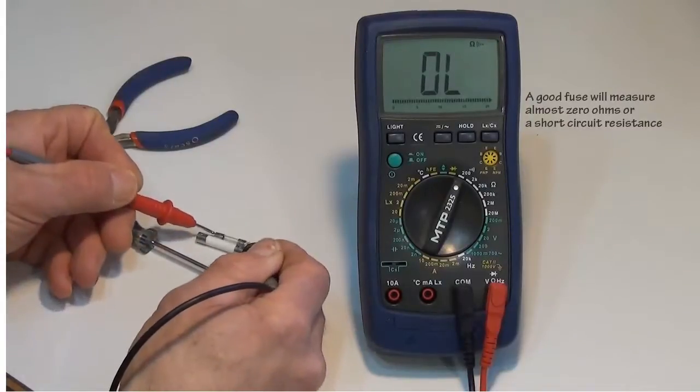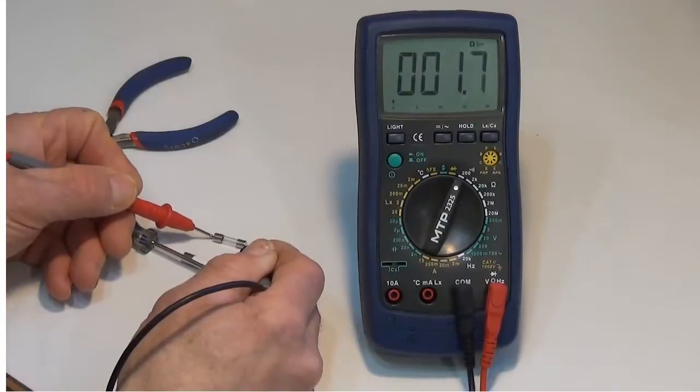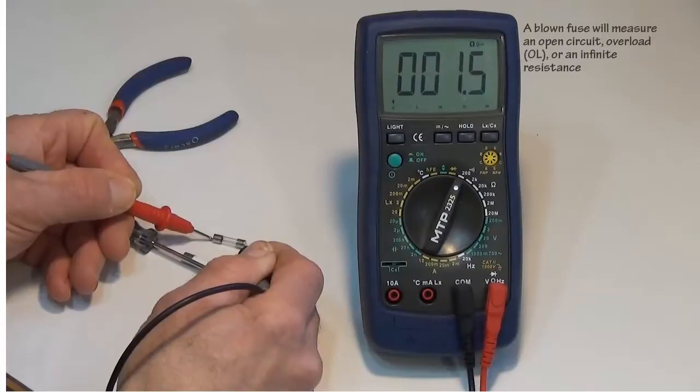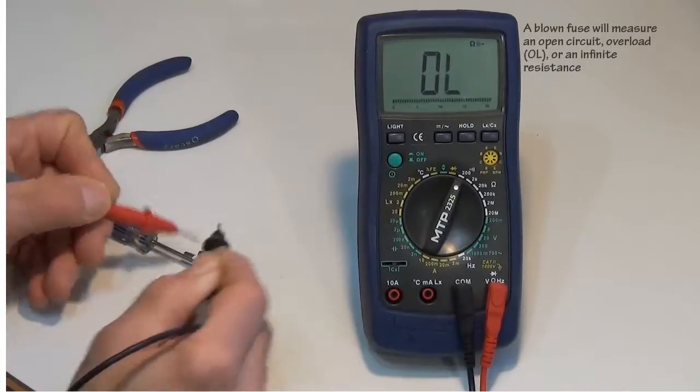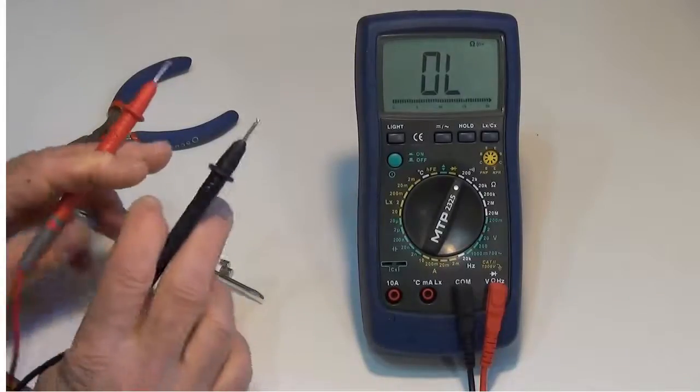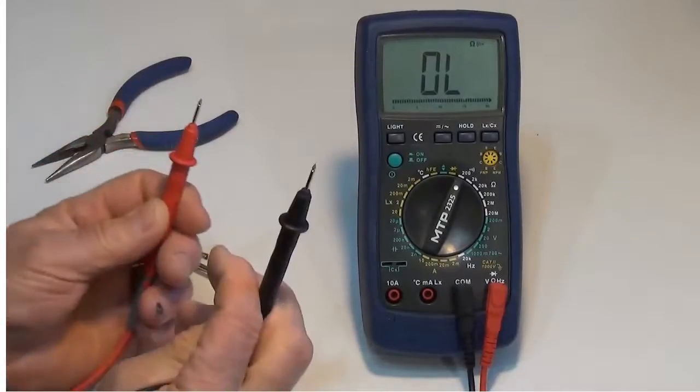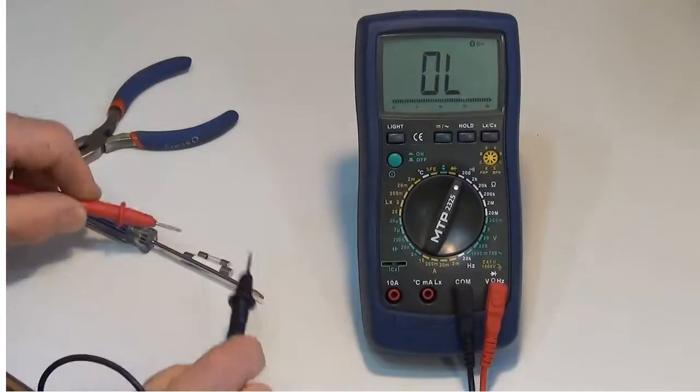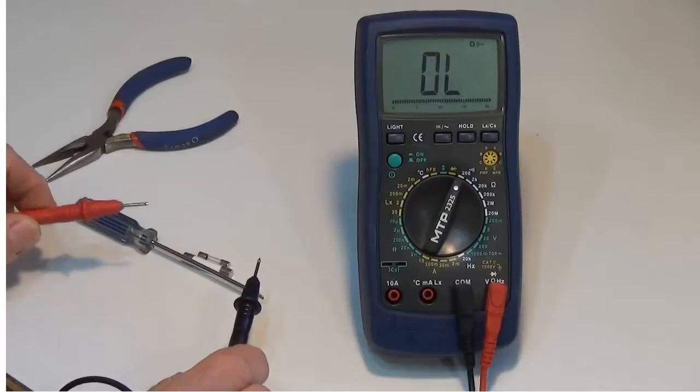And the little fuse, let's look at it. It's measuring a really low resistance also. So that's telling me these two fuses are good. If they were bad, I would get the reading like as if I'm holding these two leads together because there would be an open circuit between the two terminals of the fuses.